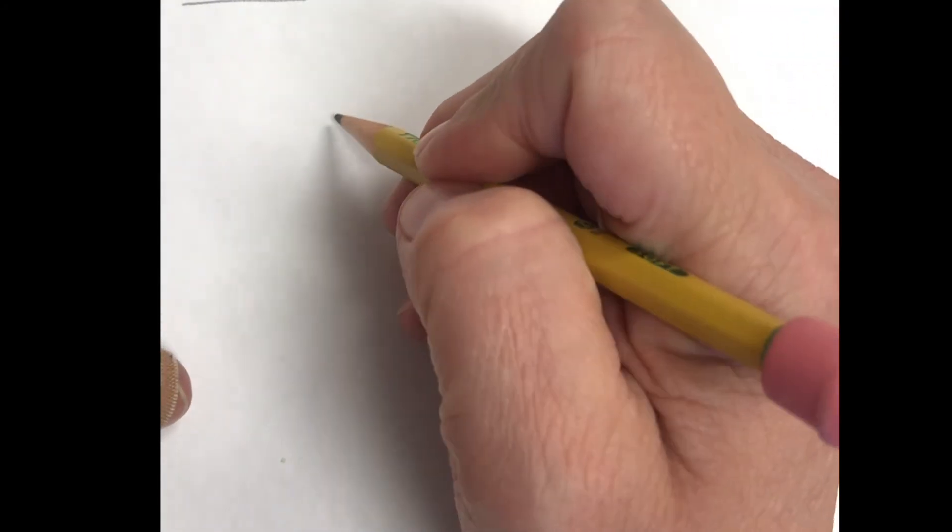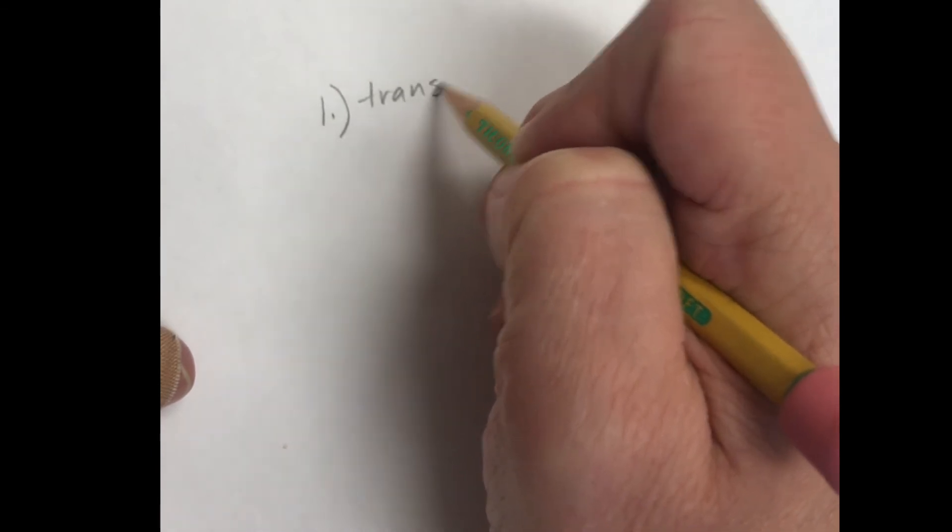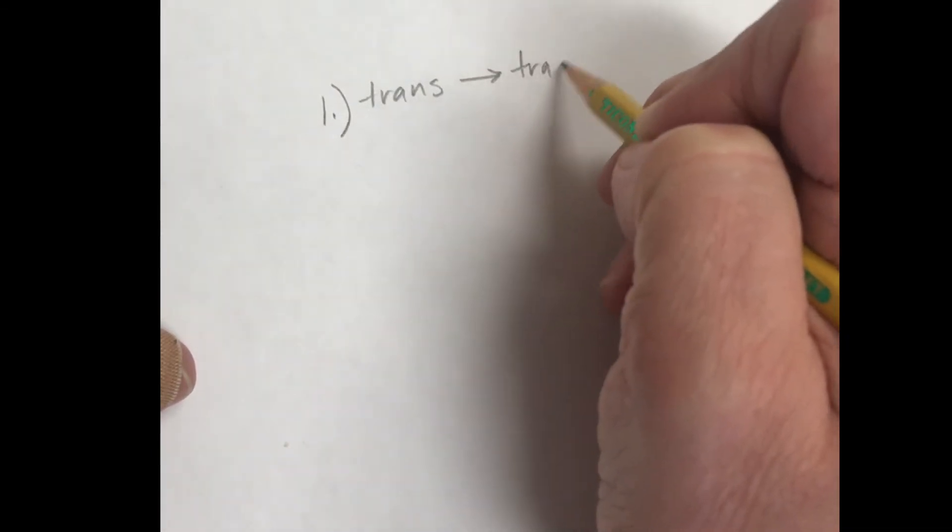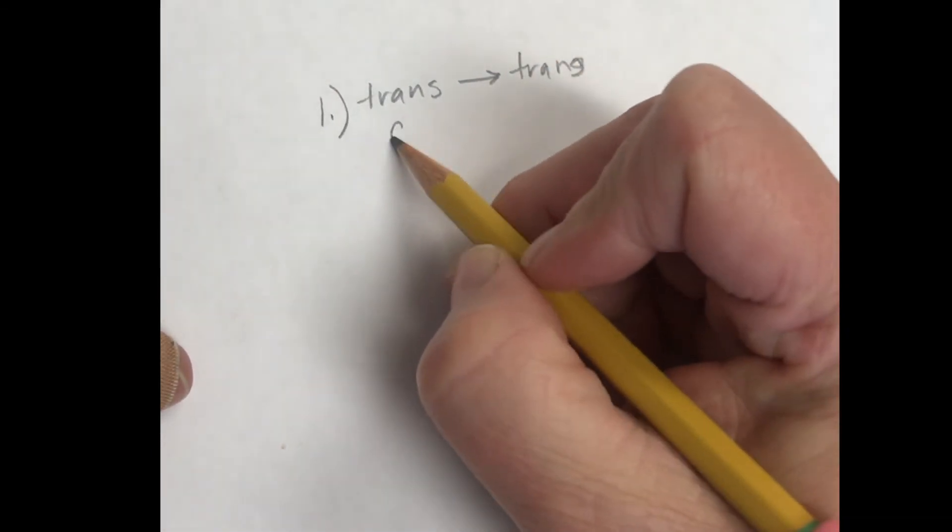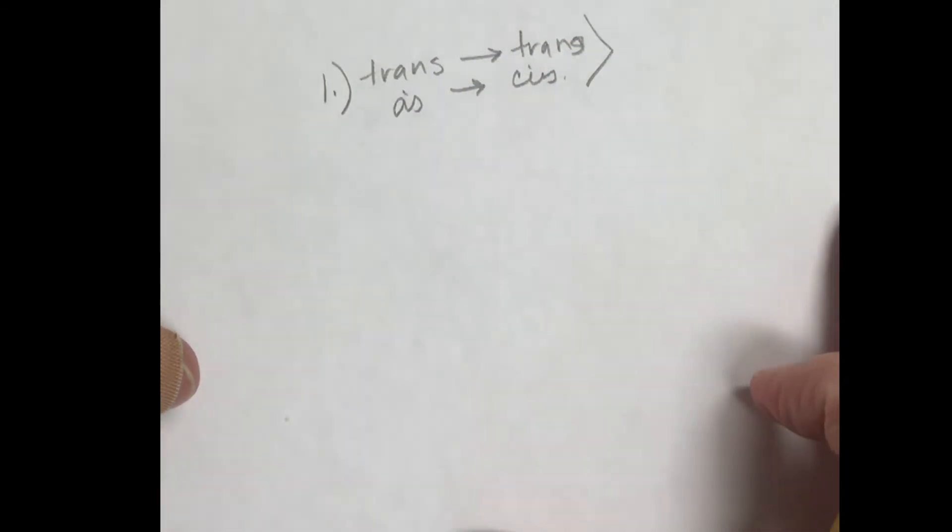And those rules for epoxides are that one, if you start with trans in your double bond, you got trans in your epoxide. Also, if you start with cis in your double bond, you got cis in your epoxide. So that's the first thing that we have to think about.